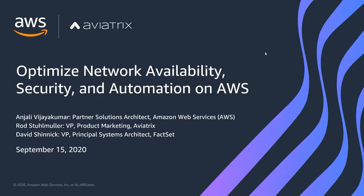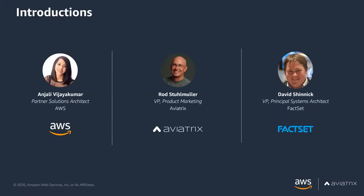Hi everybody. Welcome to today's webinar, Optimize Network Availability, Security and Automation on AWS. My name is Anjali Vijaykumar. I'll be one of the speakers and a moderator for today's webinar. I'm a Partner Solutions Architect at AWS.